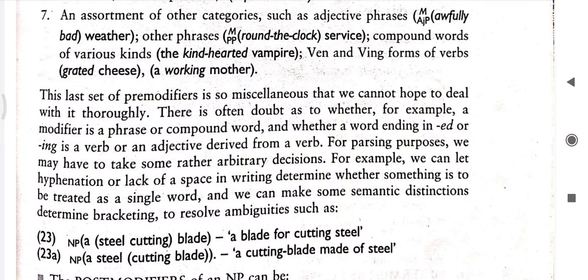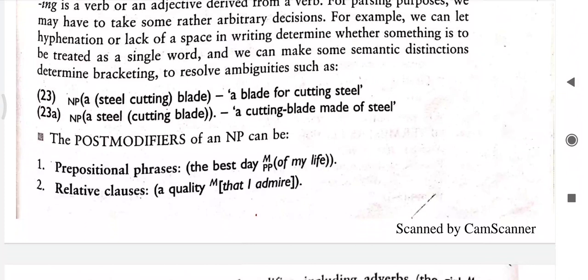There is also the possibility of indicating semantic distinctions. For example, 'a steel-cutting blade' means a blade that cuts steel, while 'a cutting blade made of steel' has a different meaning. So pre-modifiers of the noun phrase can carry distinct semantic associations. Now we move on to post-modifiers.